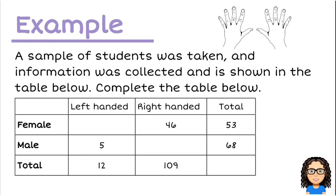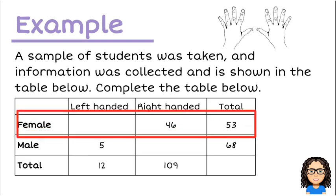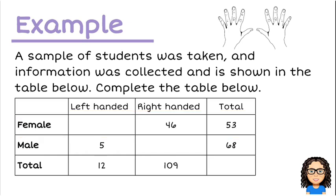So the first thing we need to do is complete this table. This comes down to some of the rules around probability tables. When we have a table, one rule is that each row has to add up. So it means that these two numbers, the number of left-handed and right-handed females, has to add up to a total of 53.